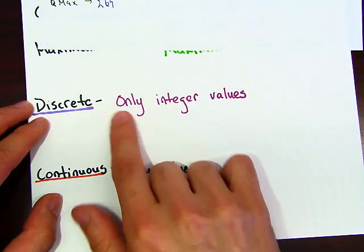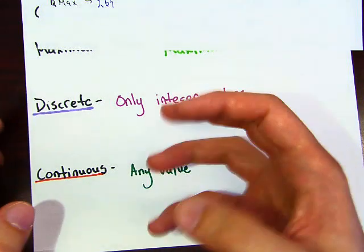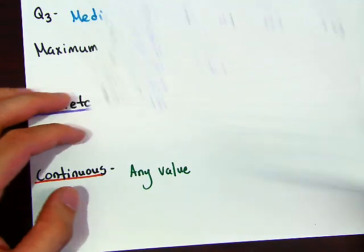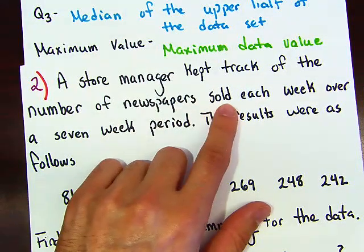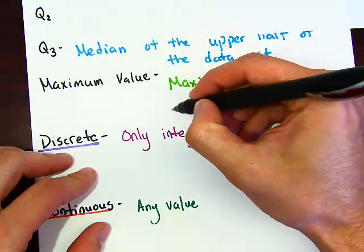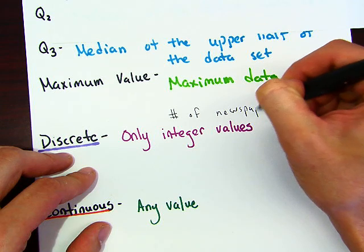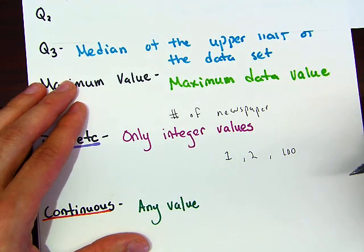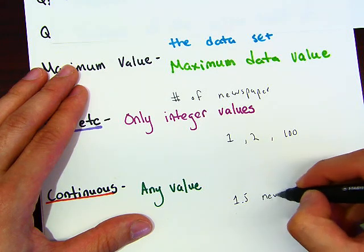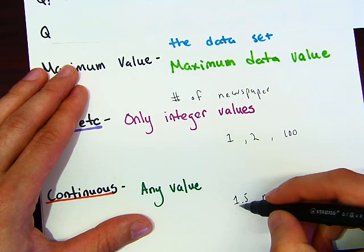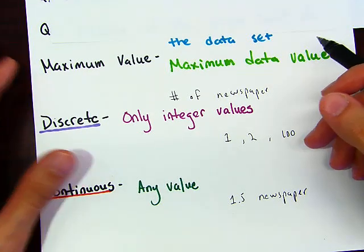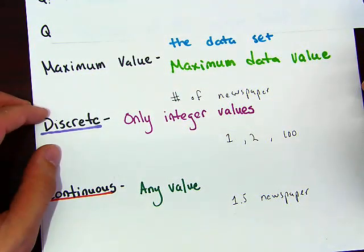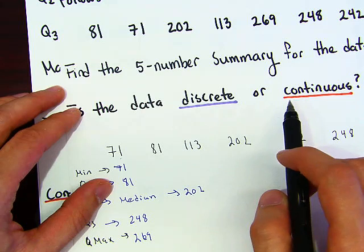The second part asks: is the data discrete or continuous? Discrete implies only integer values, while continuous means any value in between. Looking at the problem — it says the number of newspapers sold. You could have one newspaper, two newspapers, or a hundred newspapers, but you can't have 1.5 newspapers. Similarly, counting books or ice cream cones gives whole numbers only — those are examples of discrete values.